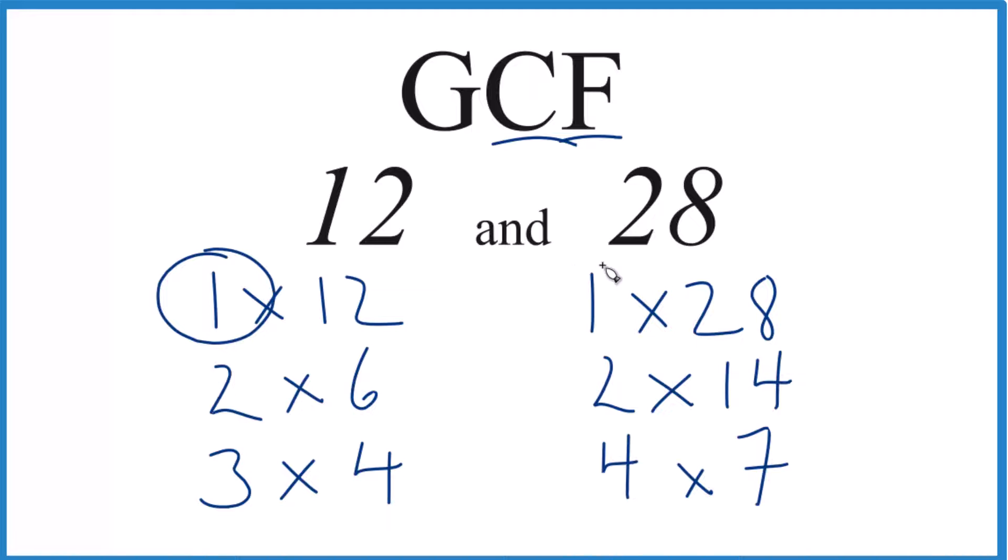So 1, that's in common. 2, that goes into 12. 2 also goes into 28. Don't have a 3. There is 4, and it looks like 4 is the greatest common factor. So the greatest common factor between 12 and 28 is 4.